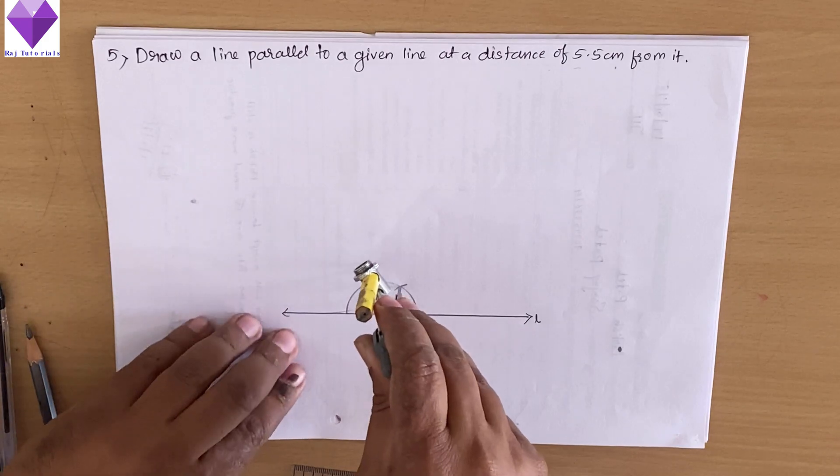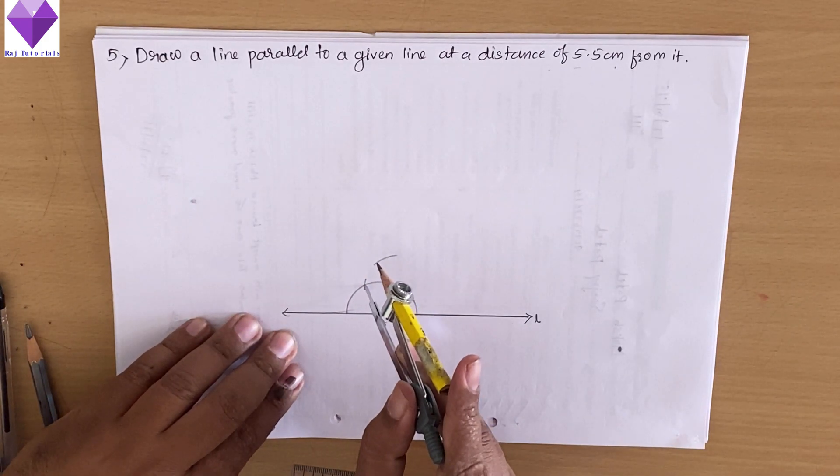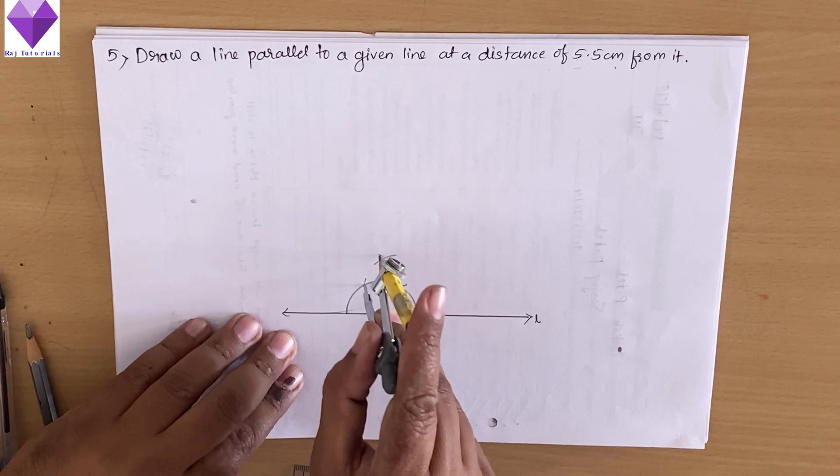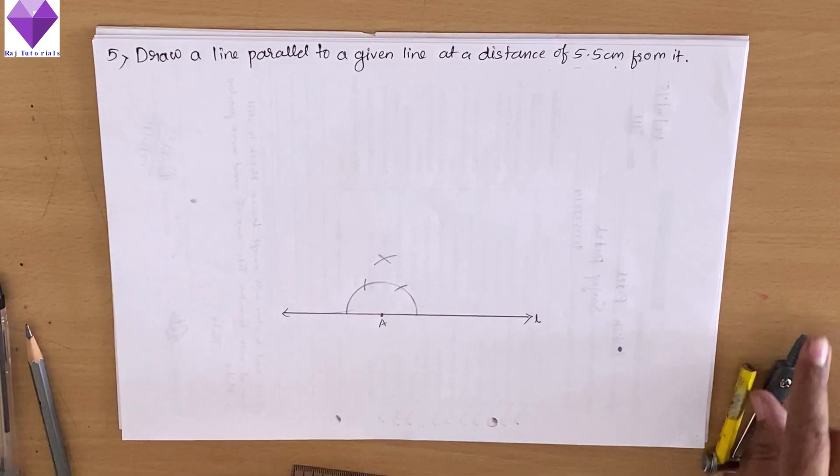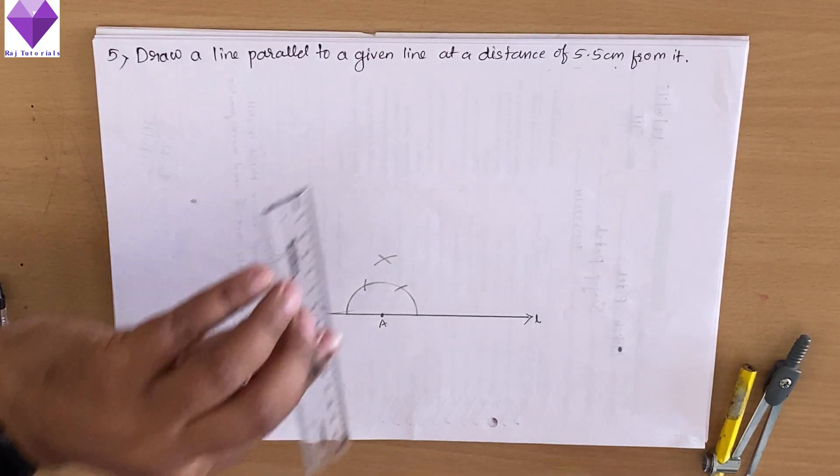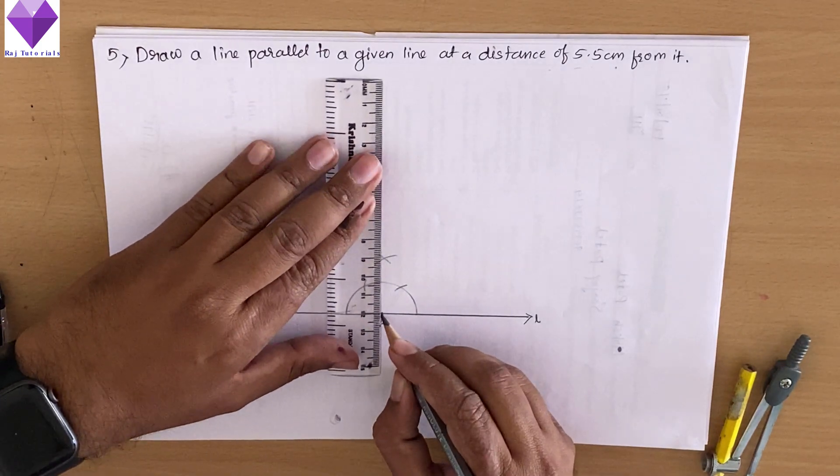Now with this 60 and 120, I will mark an arc to get 90 degrees. Now I will join point A with this arc to get a perpendicular bisector.